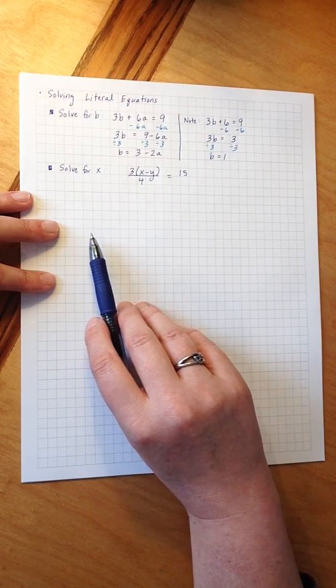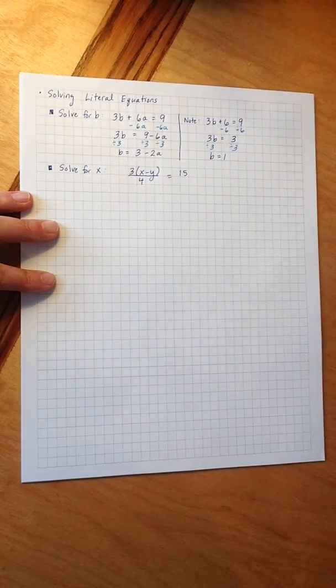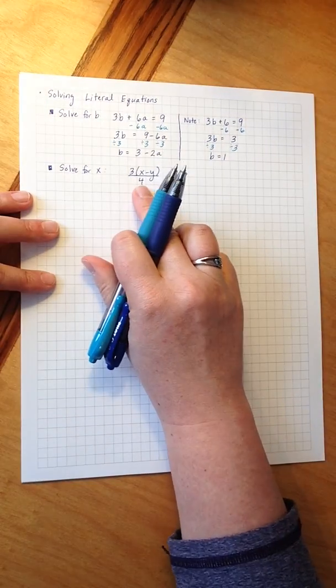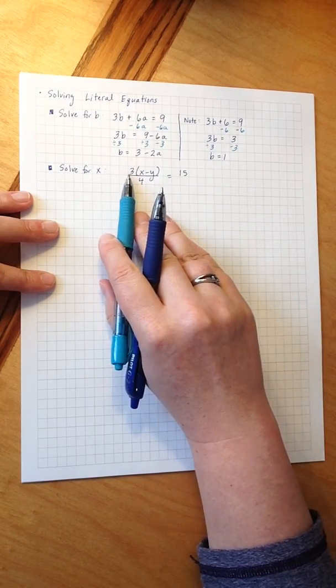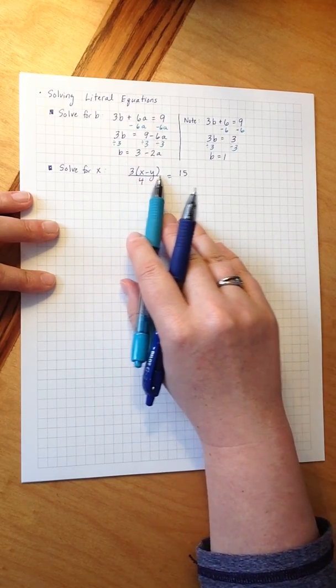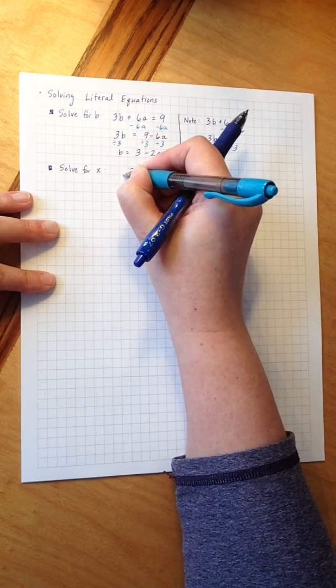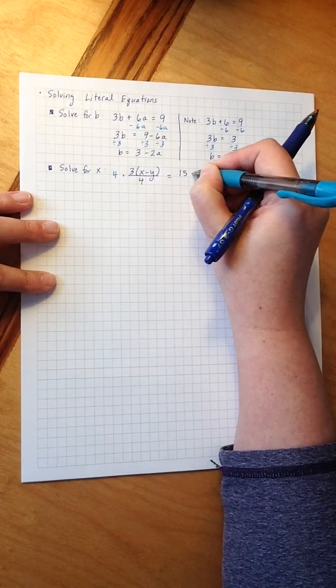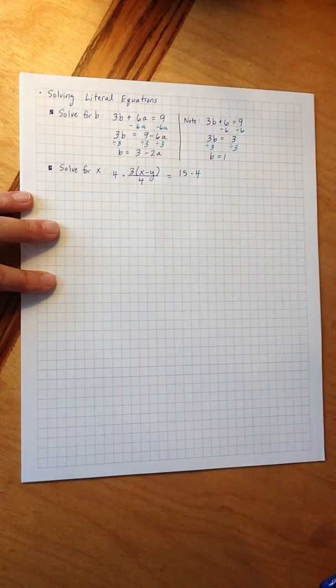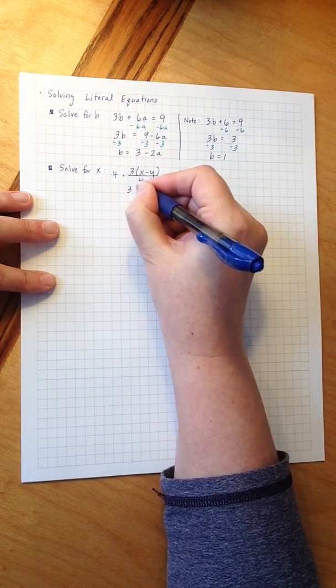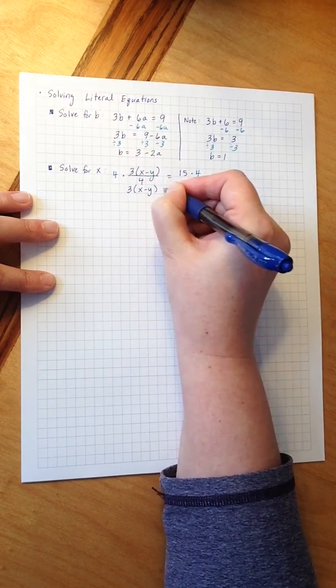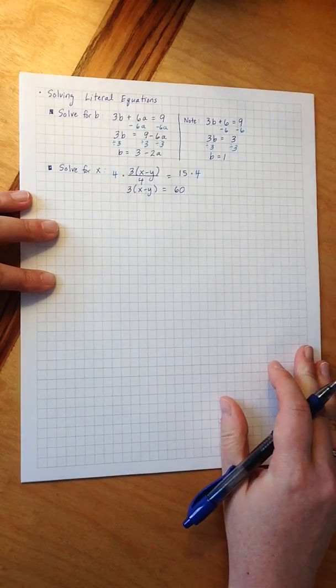The first thing I'm going to do is exactly what I did in that video, which is I'm going to get rid of this 4. The line here means divide by 4, so to undo the dividing, I'm going to multiply both sides by 4. This gets me 3 times x minus y equals 60.